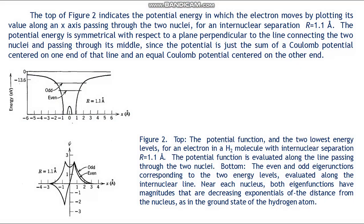Figure 2 (top) shows the potential energy in which the electron moves, plotted along an x-axis passing through the two nuclei, where the internuclear separation r equals 1.1 angstroms. The potential energy is symmetrical with respect to a plane perpendicular to the line connecting the two nuclei and passing through its midpoint. The bottom of figure 2 shows the even and odd eigenfunctions corresponding to the two lowest energy levels, evaluated along the internuclear line.